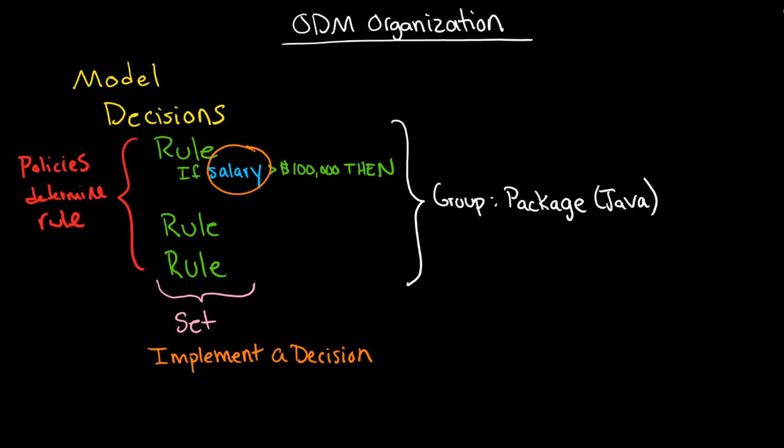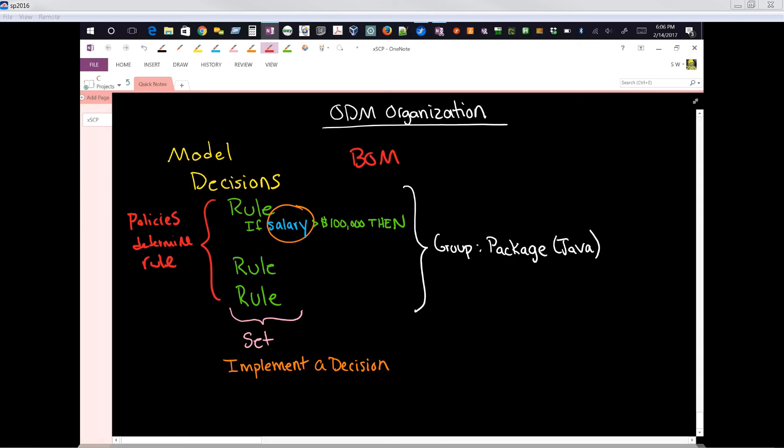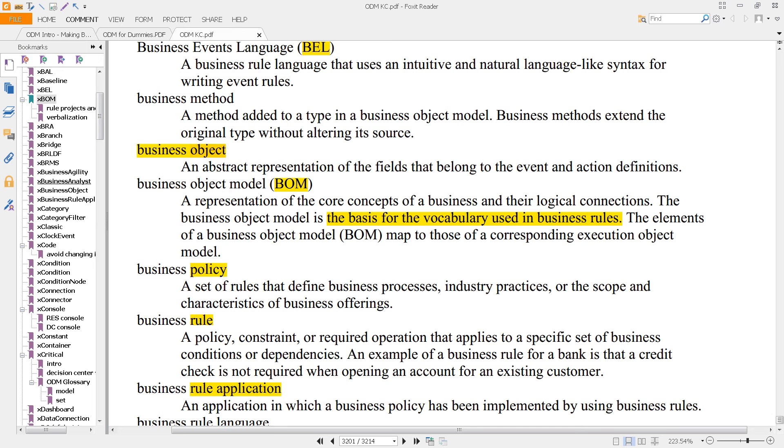When you set up variables, these verbalizations, you do so in what's called a BOM. A BOM is defined here, where you'll see it is a business object model. It's a representation of the core concepts of the business and their logical connections.